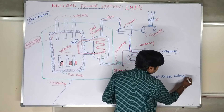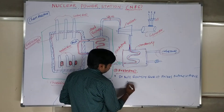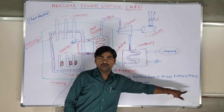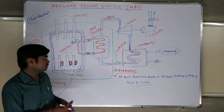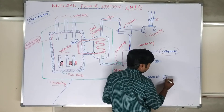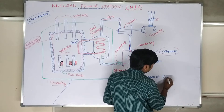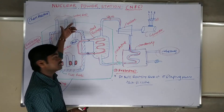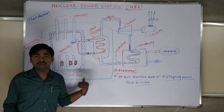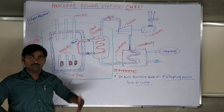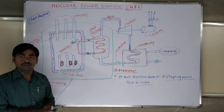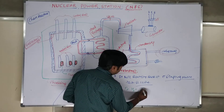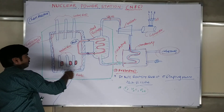The reflector bounces back the excess neutrons escaping from the nuclear reactor back into the nuclear reactor core. The purpose of the reflector is to bounce back escaping neutrons into the nuclear reactor pool. The materials used for reflectors are generally carbon, H2O, and D2O.